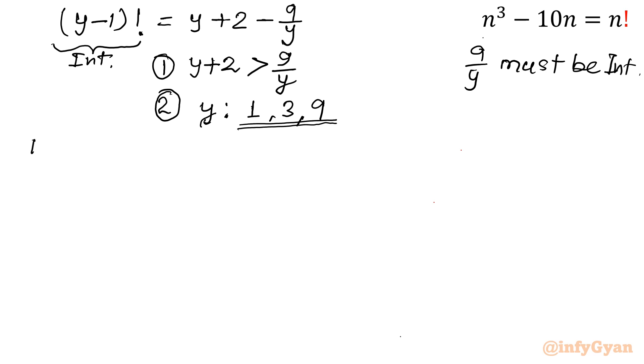Now from equation 1, multiply both sides by y. So it will be y². So y² + 2y greater than 9. y² + 2y - 9 is greater than 0.